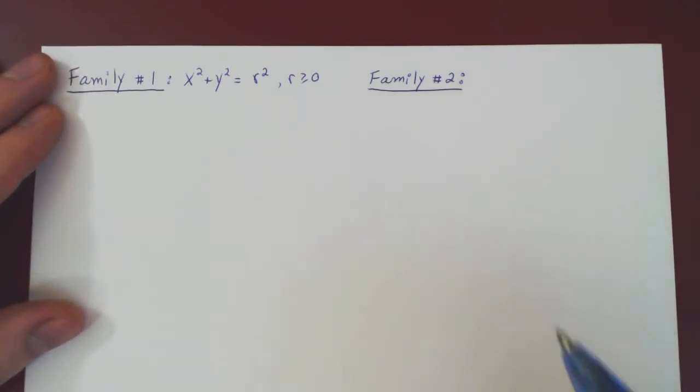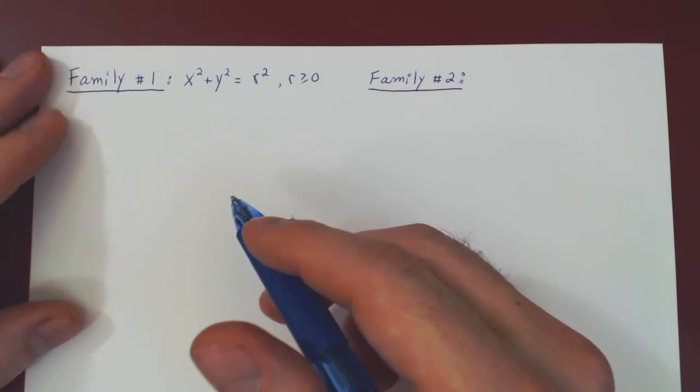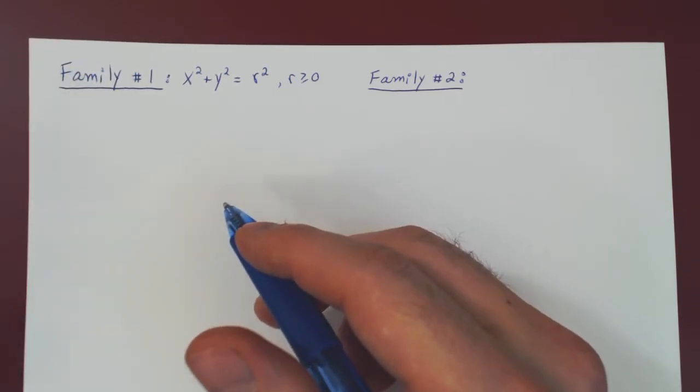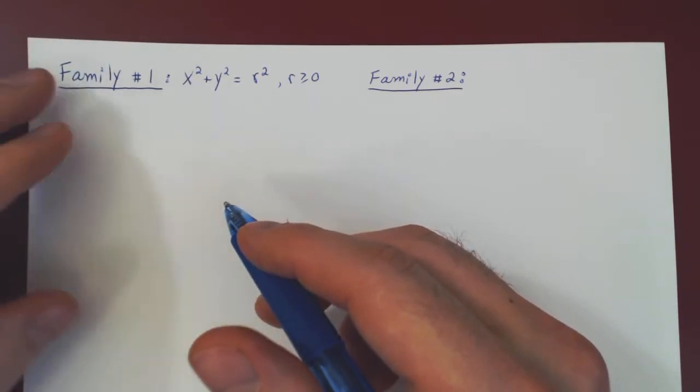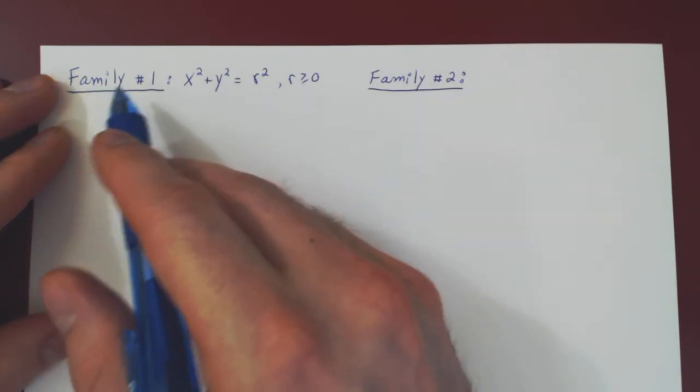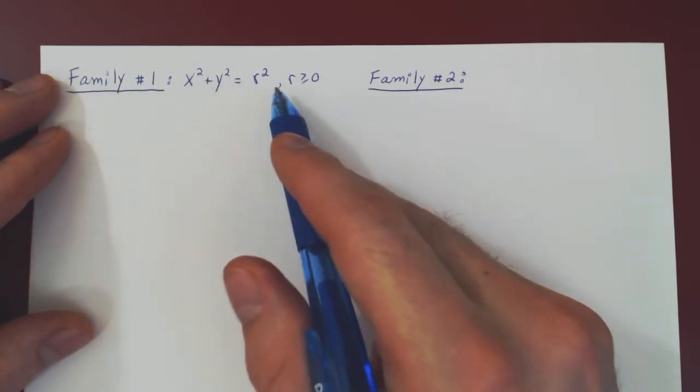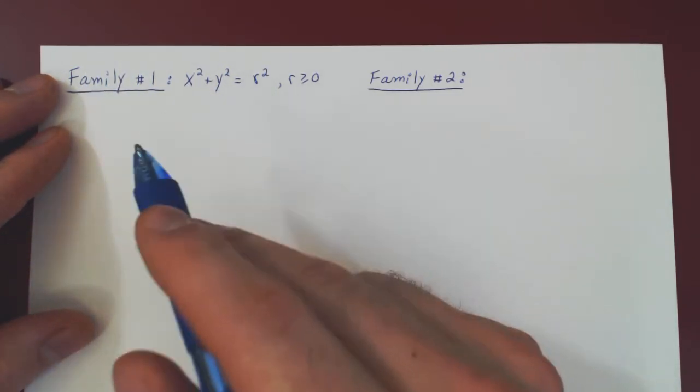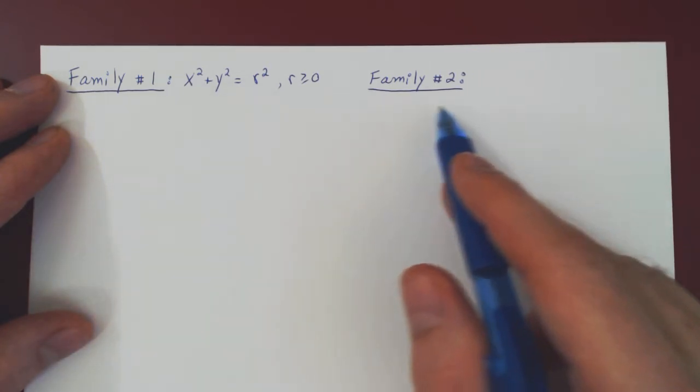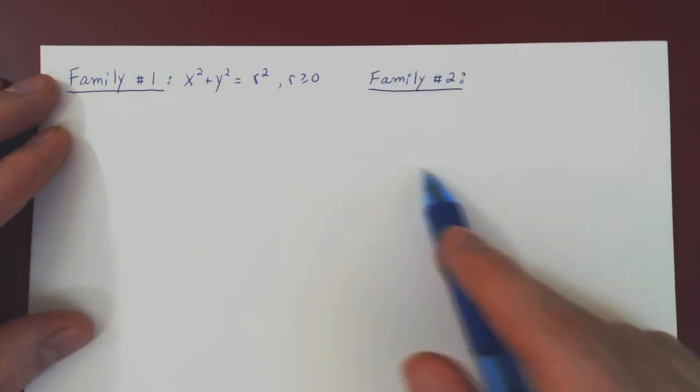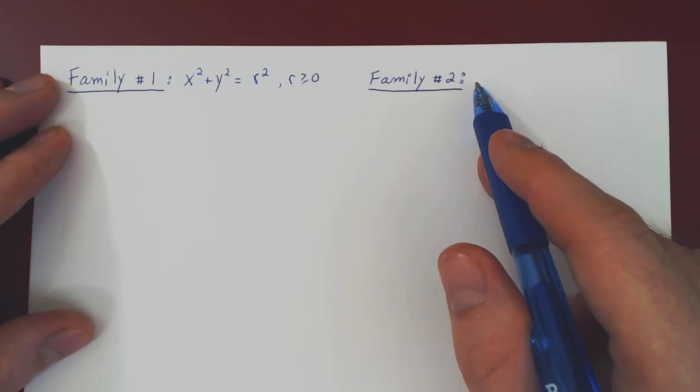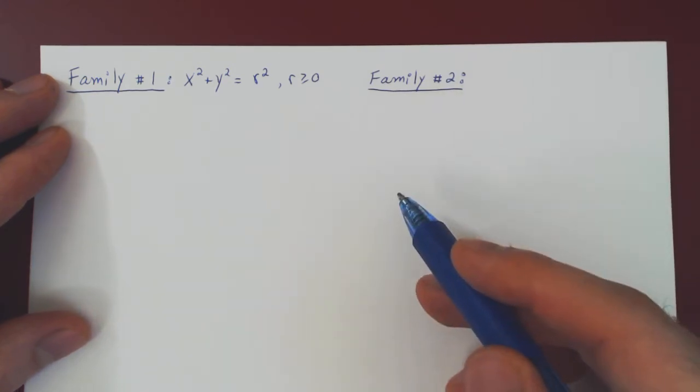Okay, so in this video I want to consider the exact same problem as we looked at in the previous video, except in the opposite direction. I want to begin with the first family being circles centered about the origin, and then from this find the given orthogonal family of curves, which we expect to be simply lines passing through the origin.